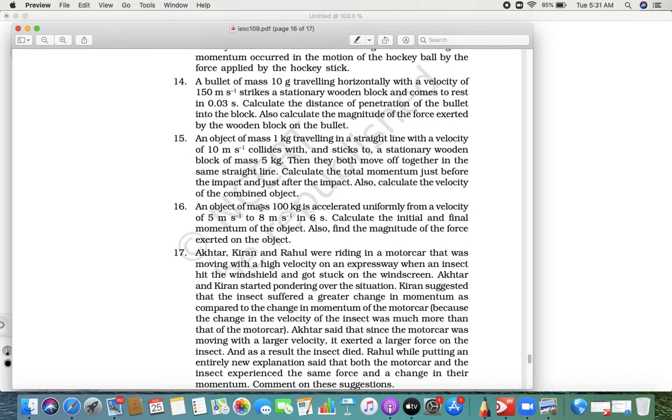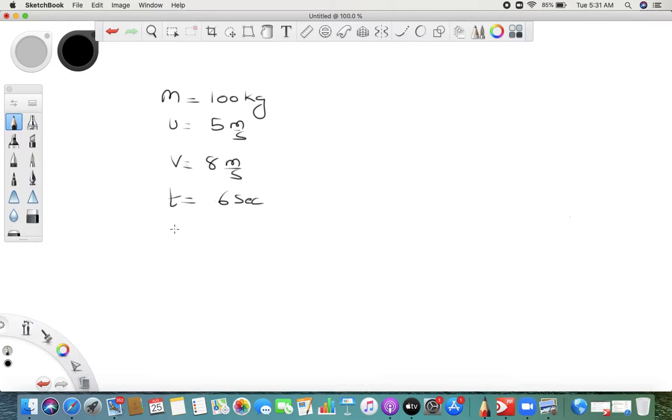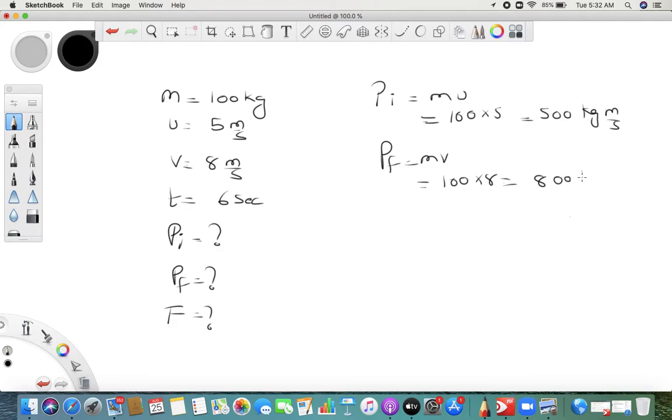We have to find out initial momentum, final momentum, and force. Now initial momentum is quite easily mu, so 100 into 5, that is 500 kg meter per second. Final momentum pf is mv, 100 into 8, that is 800 kg meter per second.